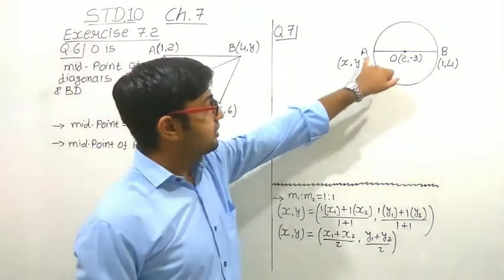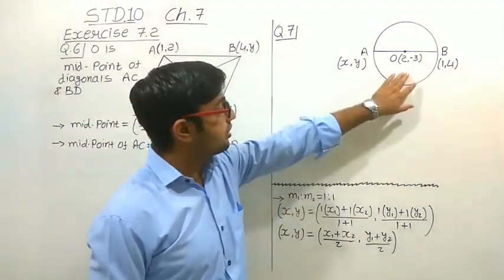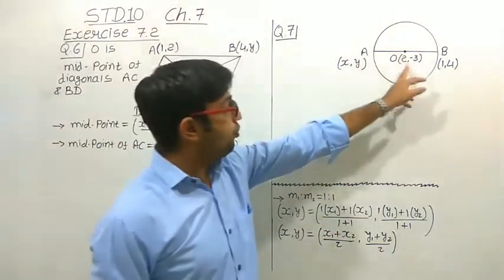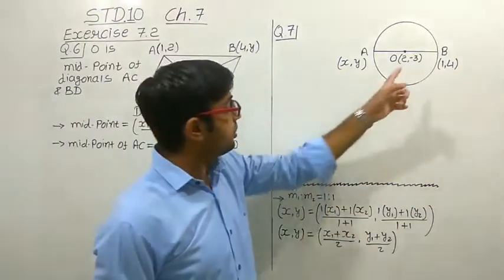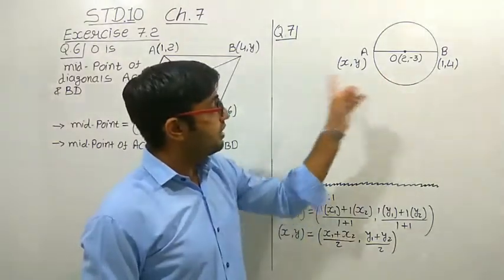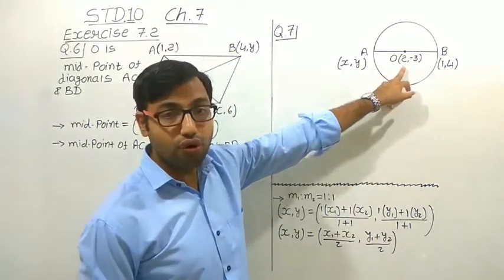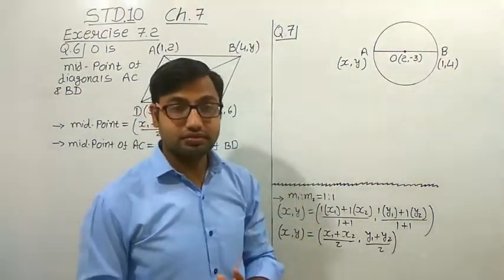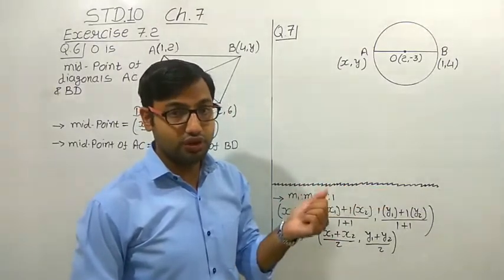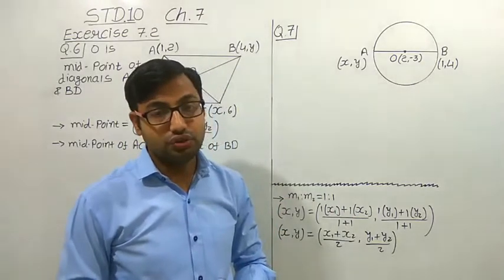See one example: there is a diameter of the circle. This is the circle with center O, and AB is the diameter. From O to B is a radius; O to A is also a radius. Both are equal. So the diameter AB is divided by the center O into two equal parts. Here we can say M1 and M2 are 1 is to 1.